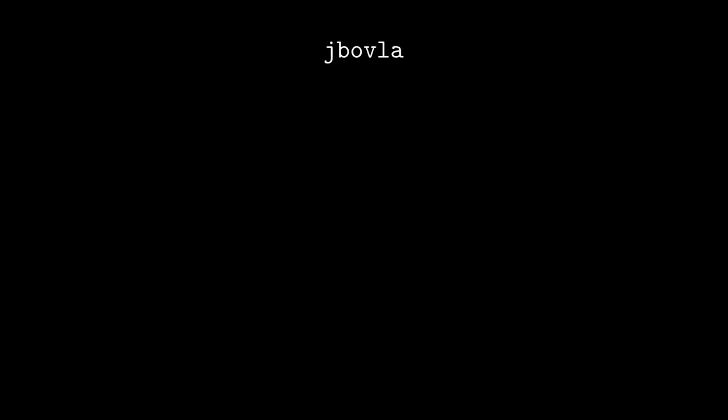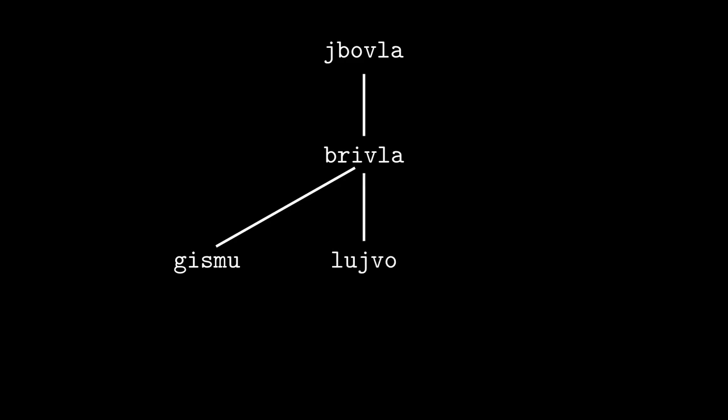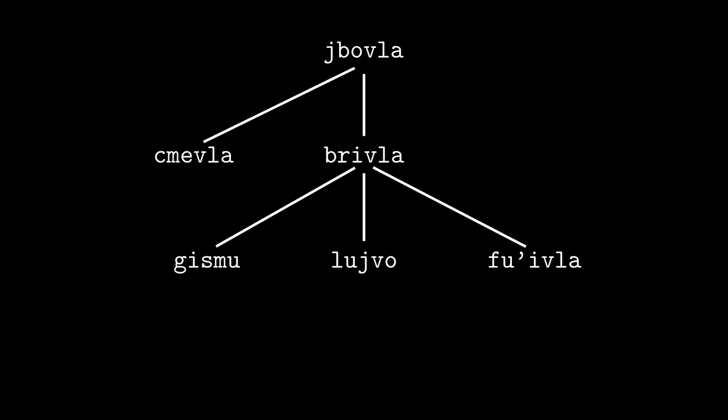But first, here's a neat diagram of some word classes. Shbovla is on top, and it just means a Lojban word. Last video we talked about the brivla, predicate words, which consists of gismu, root relations, lujvo, compound relations, and fuhivla, loanword relations. We also mentioned shmevla, the name words, and all those other little words are called shmavo, or structure words.